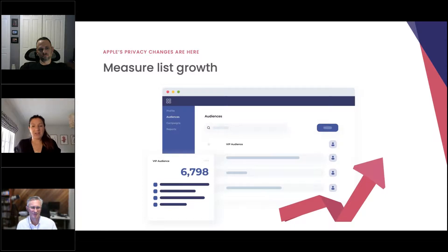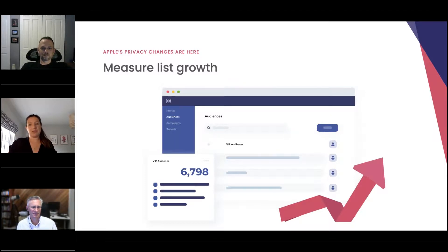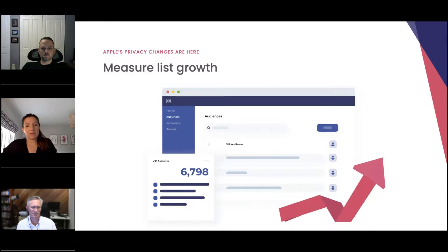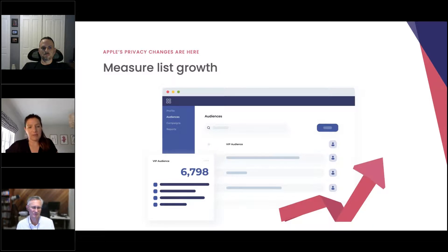Next up is another one that is often missed: measuring list growth. How frequently are you actually looking at how many people are added to your subscriber list or audience? If you're seeing your audience numbers go down, this could mean you're getting a lot of unsubscribes. If this is the case, I would urge you to review all of your communications and list sources, because a high unsubscribe rate could mean your emails aren't resonating with your audience and the cadence of sending could be too frequent. If your lists are static, you could look at your website and see how you can improve your subscriber opt-in process — perhaps enticing them with a loyalty program or bespoke offers.